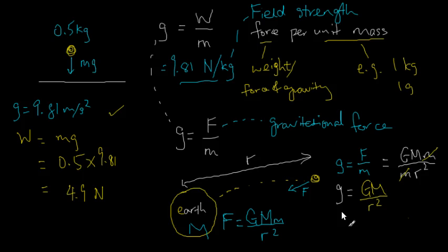We have seen that the formula for field strength, for the field strength given by little g, has this formula: the big G mass of the earth divided by r squared, which is the r being the distance from the center of the earth. So now that we have this formula,